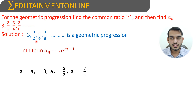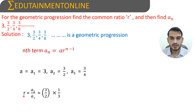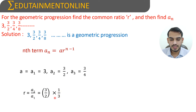The common ratio is the ratio between the second term and the first term. Here the first term is 3, the second term is 3/2, and the third term is 3/4. So R equals A2 by A1, which is (3/2) divided by 3. Since 3 is in the denominator, we write it as multiplication by 1/3, so 3 and 3 cancel. The common ratio is 1/2.